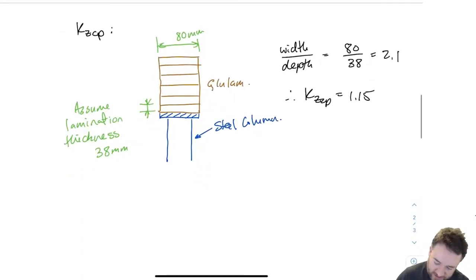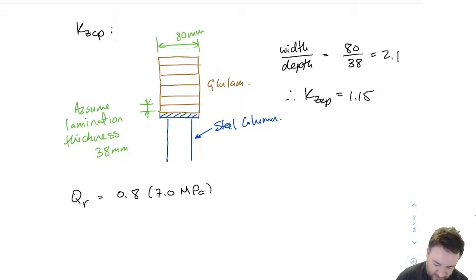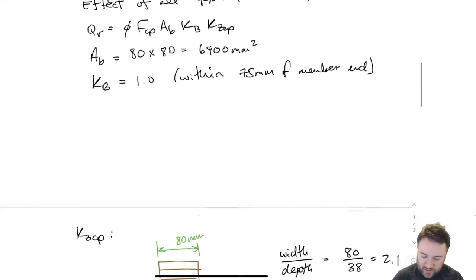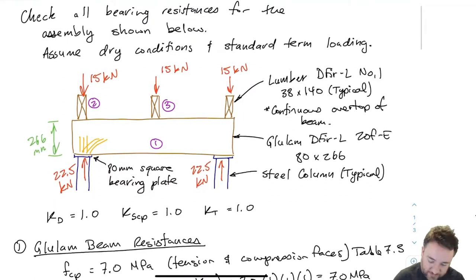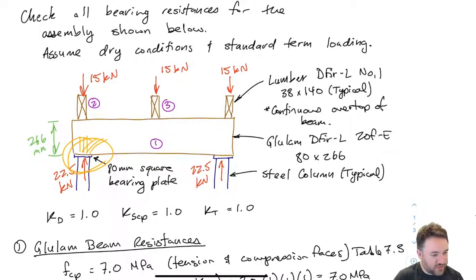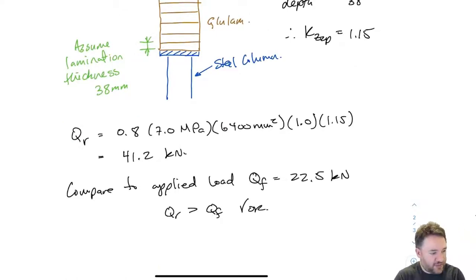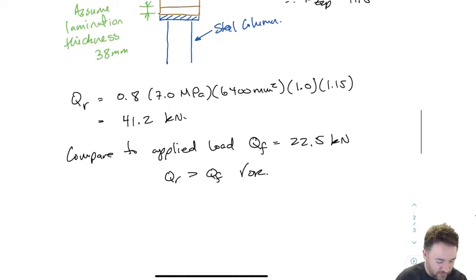Now I have all my pieces. Substituting into the effect of all applied loads equation — phi times capital FCP times area times KB (1.0) times KZCP (1.15) — I get 41.2 kilonewtons. I compare this to the total load at the steel column location, which is 22.5 kilonewtons. QR of 41.2 is greater than QF of 22.5, so everything is fine.